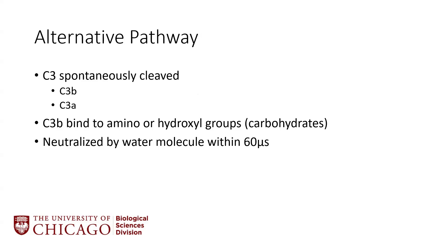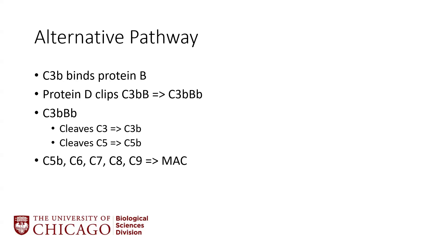The alternative pathway is usually the easiest to understand because it starts with C3, which is just spontaneously cleaved. It's cleaved into two components: C3B and C3A. The C3B binds to amino hydroxyl groups on carbohydrates, but if it can't bind, it's neutralized by water very quickly — in under a second. So there is this continuously spontaneously cleaved C3, but if there's not the right target for it to bind to, it's neutralized very quickly. That's why we're not overwhelmed in a normal state with complement. C3B will then bind to something called protein B, and then protein D comes along and clips B.